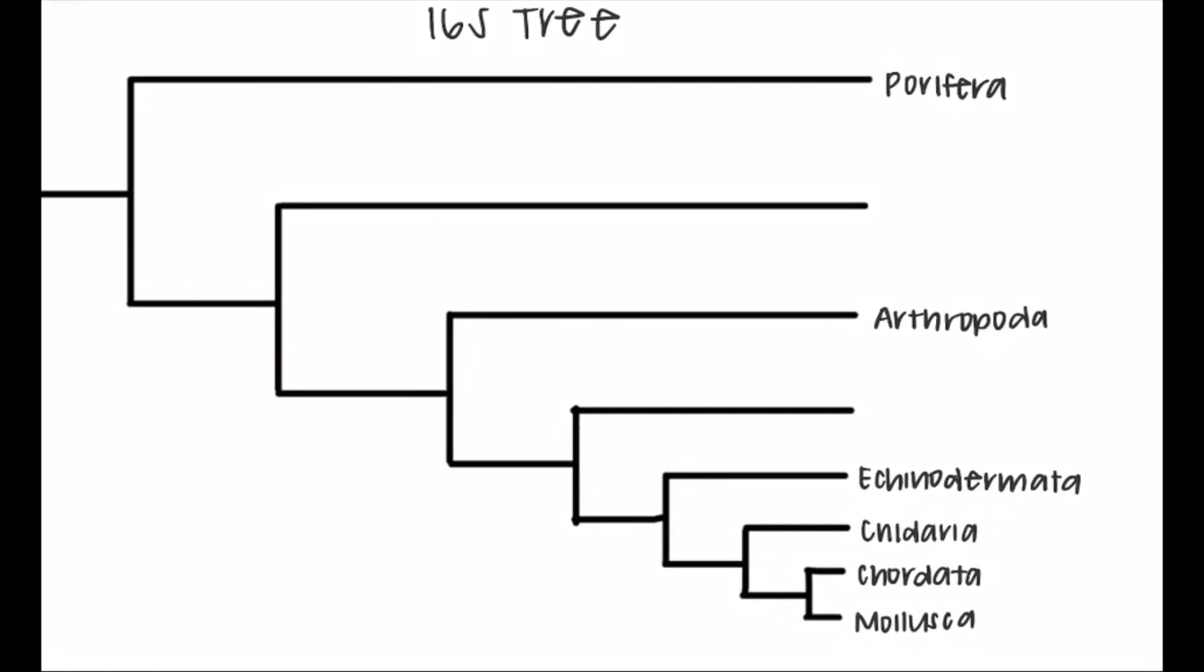As for the 16S-RNA phylogenetic tree, the closest relative was Echinodermata. Our data matrix showed that Sipuncula and Annelida shared a lot of common characteristics and were similar.